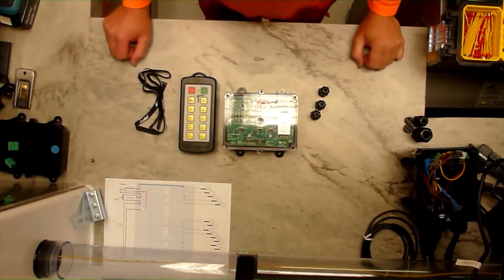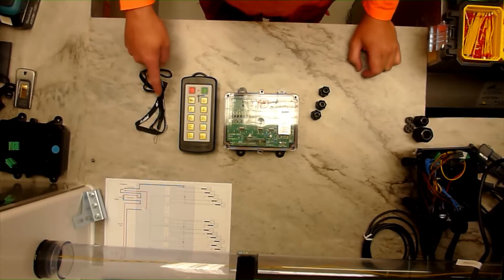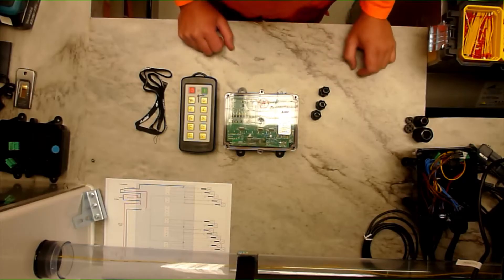To wire up a 10 function Lodar system and above. This is what you get in the box: lanyard, transmitter, receiver and some cable glands.